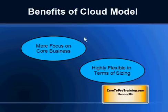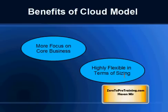Two main benefits you get from a cloud model: number one, more focus on core business; number two, cost saving because of high flexibility in terms of sizing. You do not need tons of storage and lots of CPU to start with. You can start with small resources, and as your business grows you can add more resources. If business goes down, you can reduce resources. Lots of flexibility means lots of cost saving.